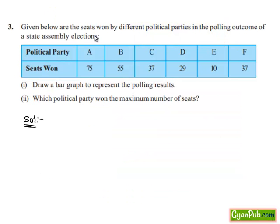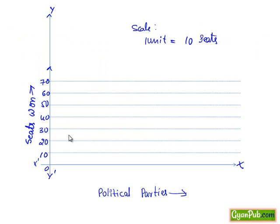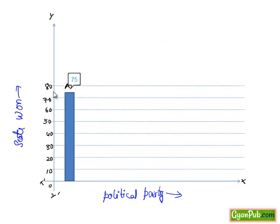And now for political party A there were 75 seats won. It is above 70. And if we plot a bar graph here we get as follows. It is between 70 and 80 which is 75.